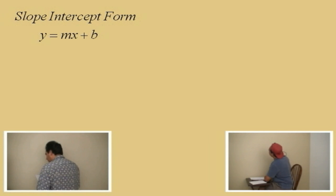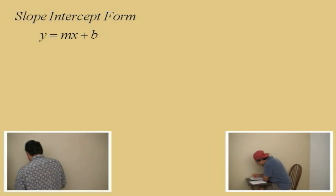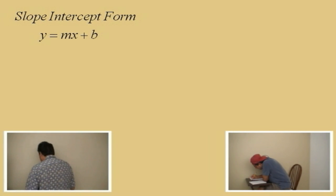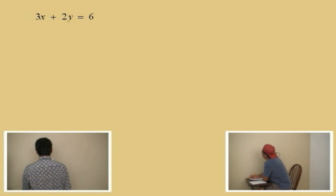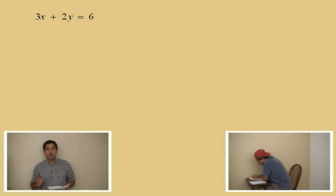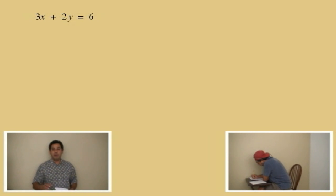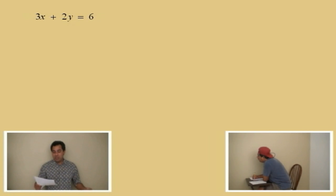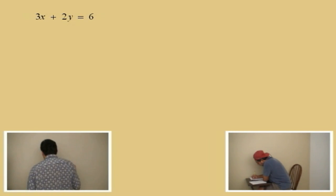Y equals mx plus b — that's what we're going to be working with. So let's go ahead and list our equation. Here's our equation of our line. What we have to do is write this equation in the y equals mx plus b form, which is the slope-intercept form, Charlie, which means we simply just have to solve for y. So Charlie, solve for y. What do we do first?